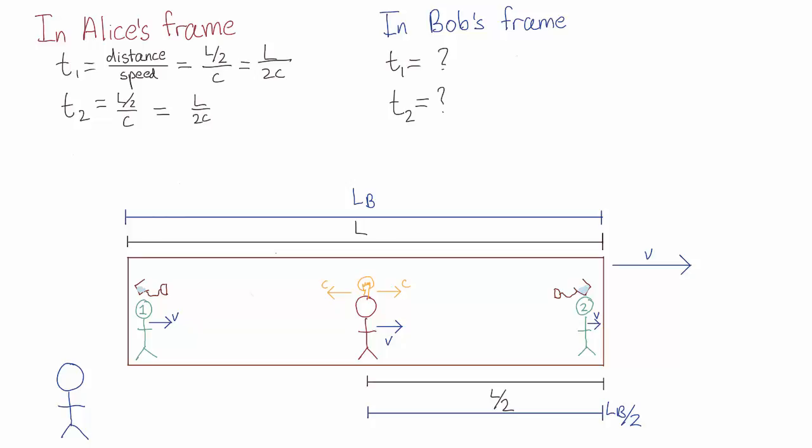So our Newtonian intuition tells us that in that case, the forward-facing photon would be emitted at speed c plus v, and the backward-facing one at c minus v.